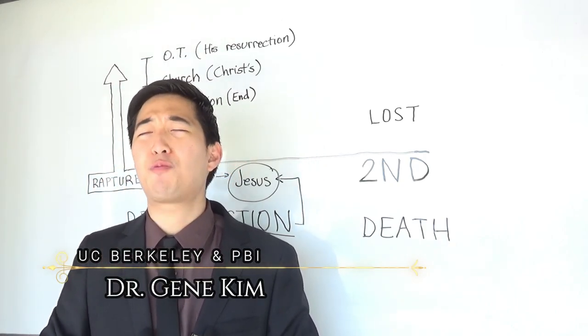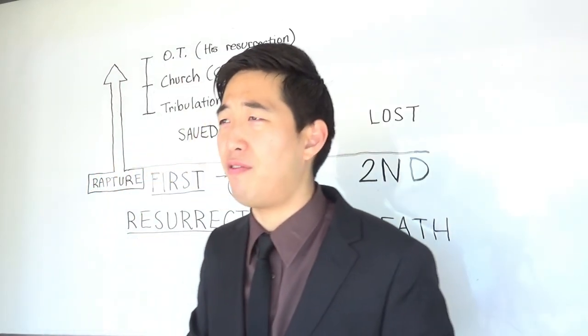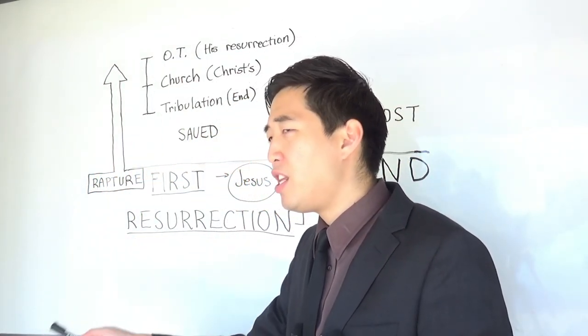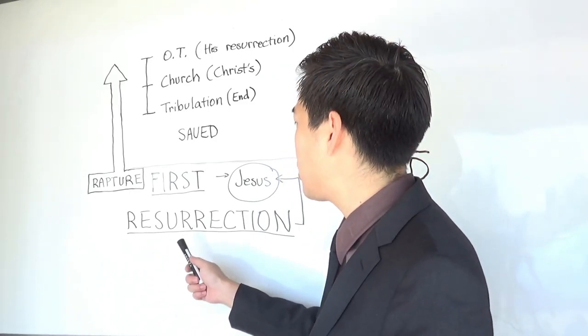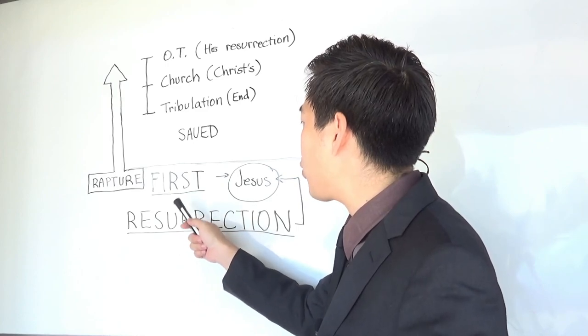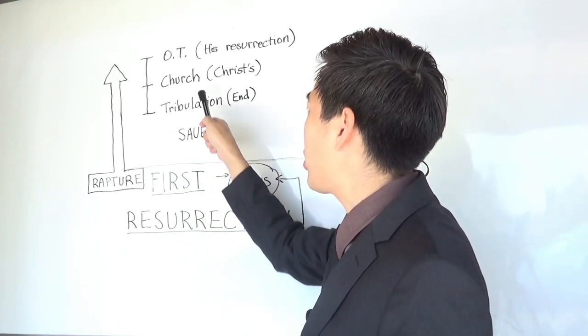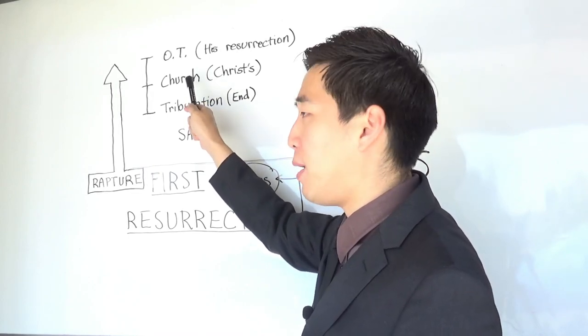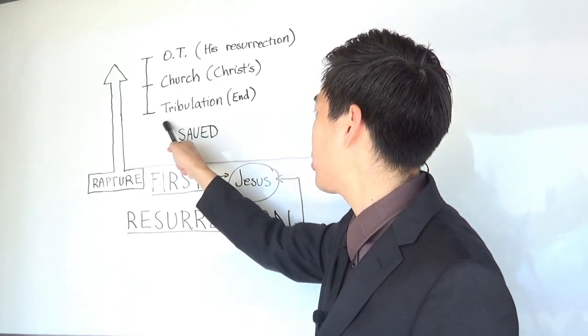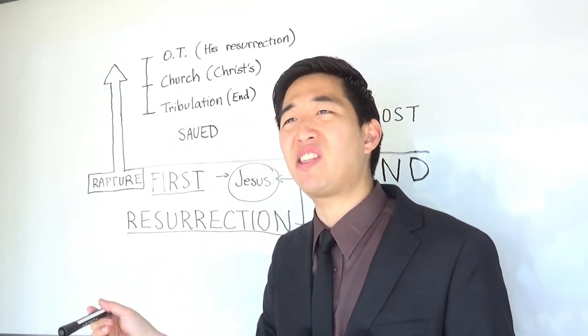Some people who hate dispensationalism, it's because they lose followers and subscribers and eventually get kicked out of YouTube and have to start from scratch all over again. These people hate dispensationalism, so what they'll argue about this first resurrection is, the first resurrection has to be only tribulation saints. Hence, there cannot be a pre-trib rapture because the first rapture has to start with tribulation saints. That's what people will do when they hate dispensationalism.